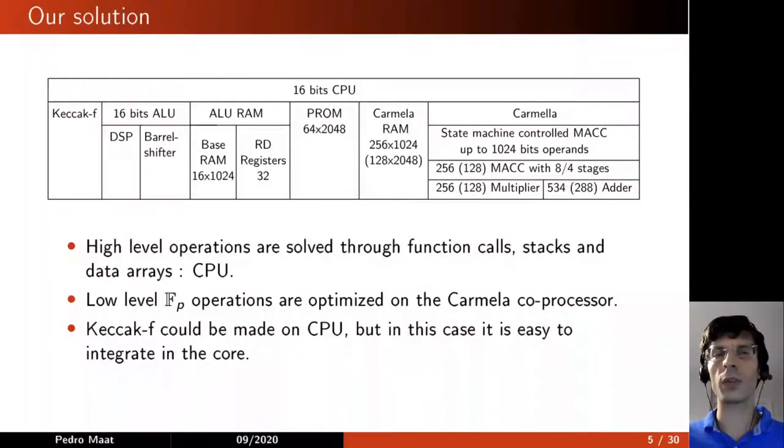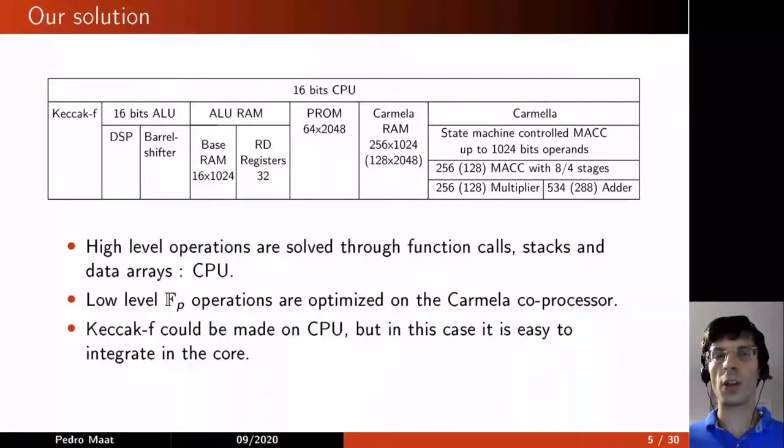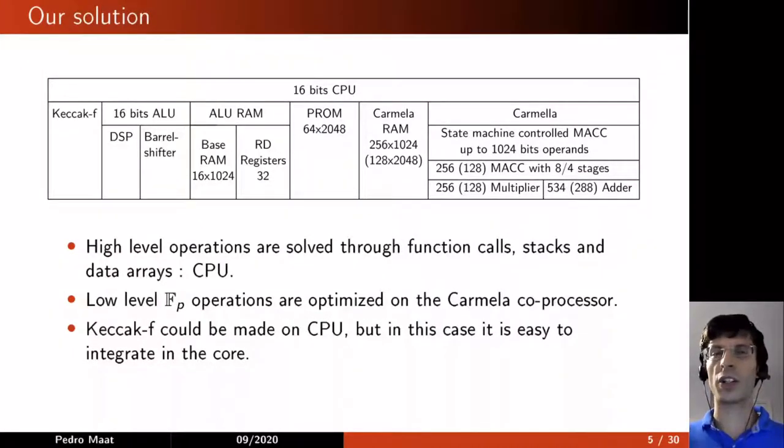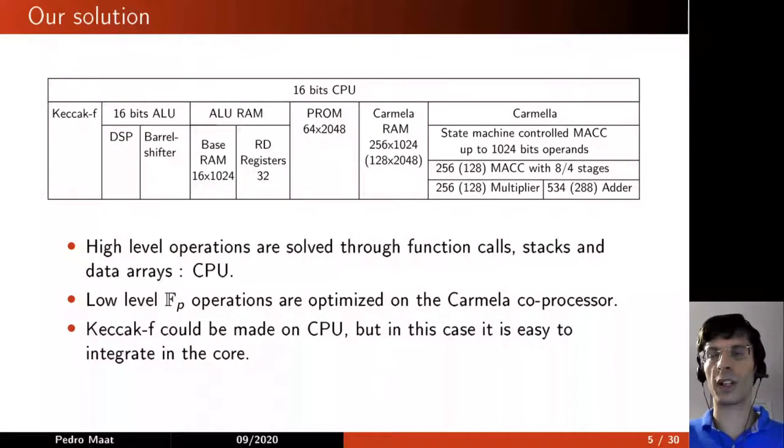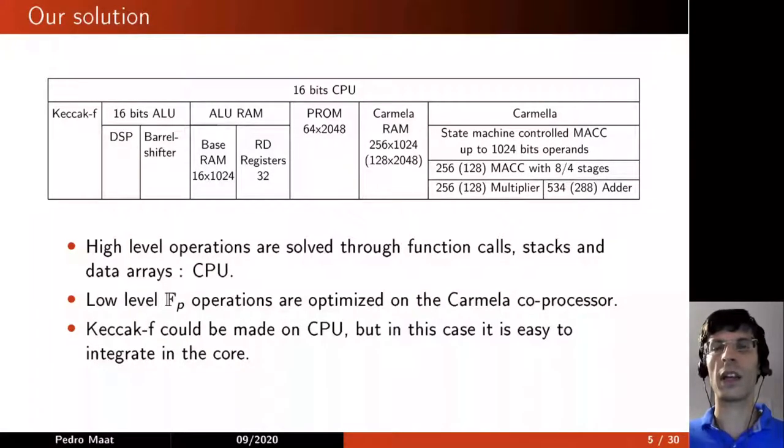So what's our solution? Our solution is a 16-bit CPU. We need function calls, we need data arrays, we need stack operations, and those are usually well done for CPUs. So then we chose to make a CPU and then make the prime field operations as a coprocessor of such CPU. That's Karmakar. Karmakar is the coprocessor, which most of the project spent time on. The Keccak-F is taken from the Keccak package. We just took it and integrated it into our CPU.